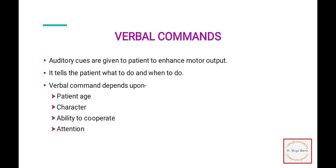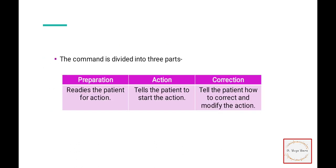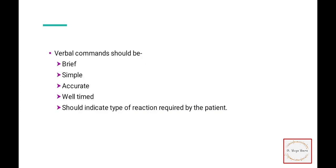Verbal commands tell the patient what to do and when to do it. The approach depends on the patient's age, character, ability to cooperate, and attention. Verbal commands are divided into three parts: preparation, action, and correction. In preparation, the patient is readied for the action. In action, the patient is told to start. In correction, if the patient makes a mistake, it is corrected. Verbal commands should be brief, simple, accurate, well-timed, and should indicate the type of reaction required by the patient.